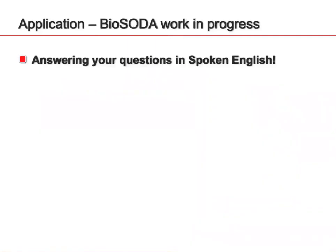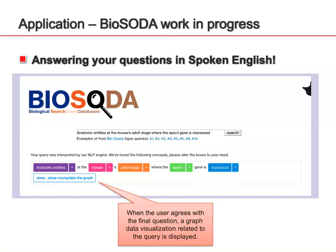Another application, currently a work in progress, aims to answer questions in spoken English. The user can directly write their question in natural language, which gives more flexibility. The system will suggest interpretations of the user's question and provide the answer. Hopefully the final prototype will be available by the end of this year.